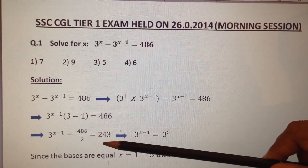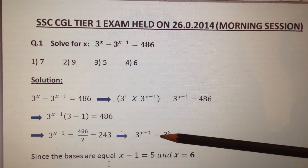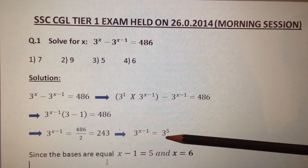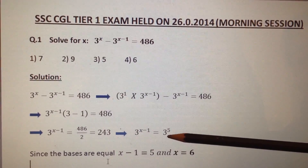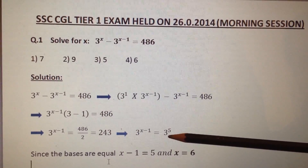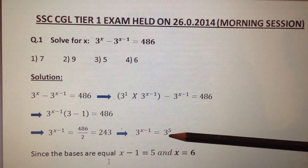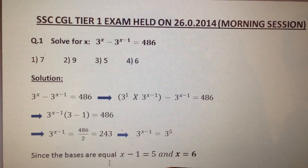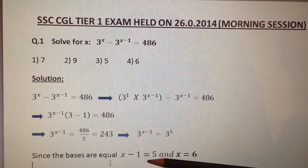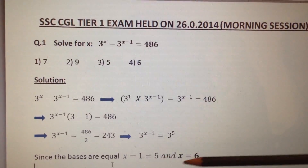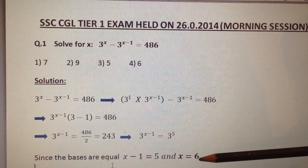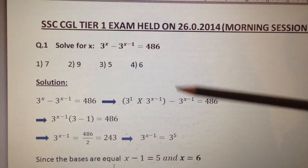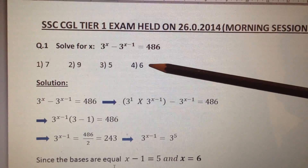Now, 243 can be written as 3 power 5. Therefore, 3^(x-1) is equal to 3^5. Since the bases are equal, x minus 1 is equal to 5 and x is equal to 6. So the answer is option number 4.